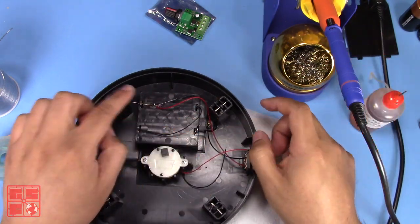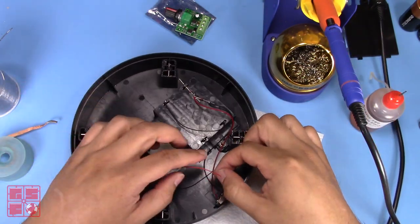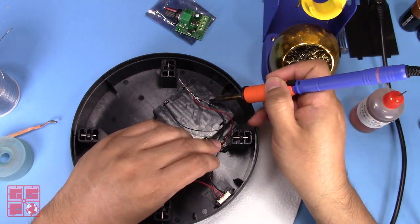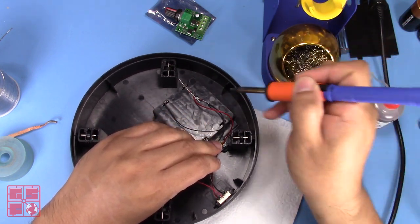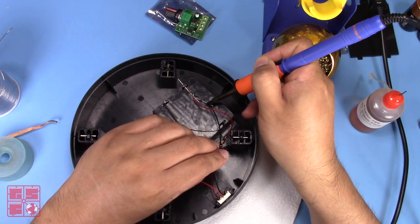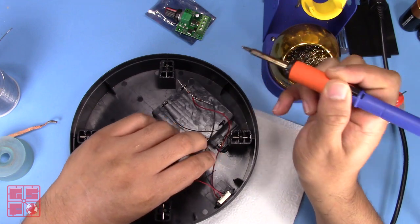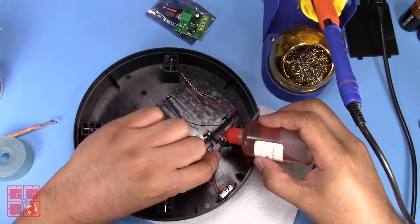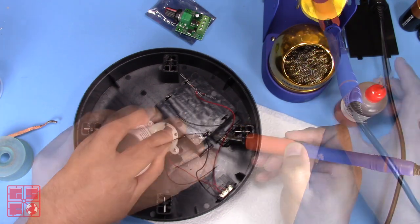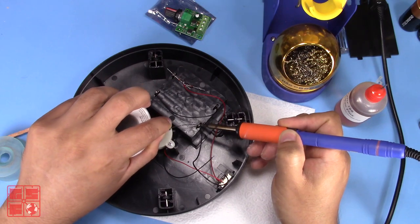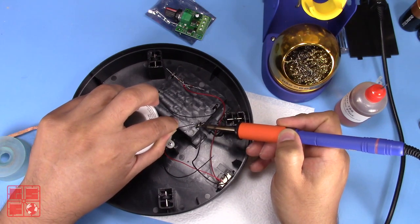And now I'm going to repurpose this black wire that used to control the low speed setting and reuse it as my new negative lead for the battery box. Using flux and leaded solder makes soldering so much easier. Leaded solder joints with flux always look shiny and nice.